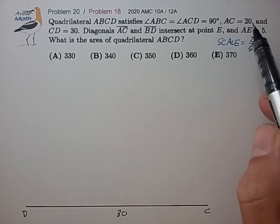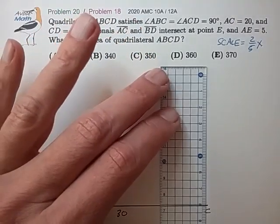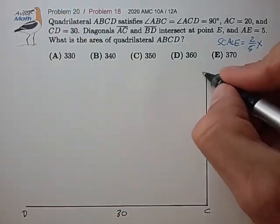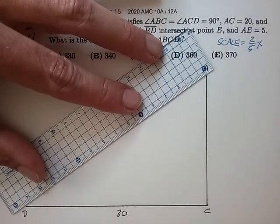Now AC has length 20 times the scale of 2 fifths equals 8 centimeters. Draw that in perpendicular. That's point A. Let's draw the other side.